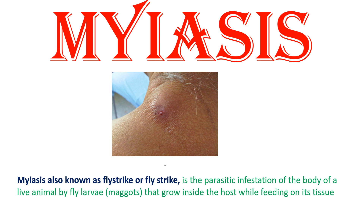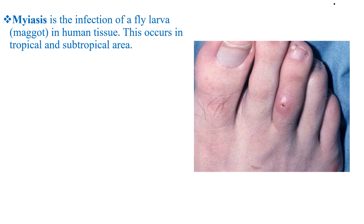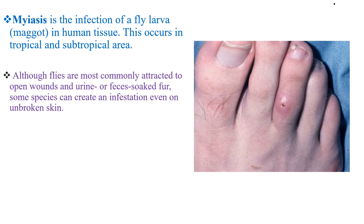Myiasis, also known as fly strike, is the parasite infestation of the body of a live animal, including human beings, by fly larvae or maggots that grow inside the host while feeding on its tissue. Myiasis is infestation of maggots in human tissue, and this occurs in tropical and subtropical areas mainly. Although flies are most commonly attracted to open wounds and urine or moisture-soaked areas, some species can create infestation even on unbroken skin.